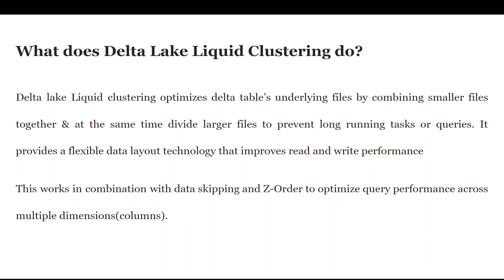We basically optimize the Delta table's underlying files using Delta Lake liquid clustering — we combine smaller files together or divide the larger files. Now the question is: how is this different from Z-order and the optimize command? The catch is it is doing pretty much the same thing, but more effectively.